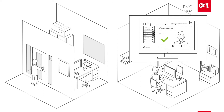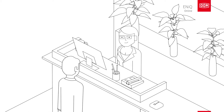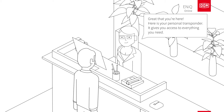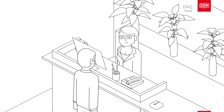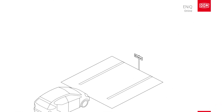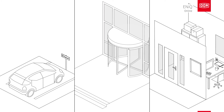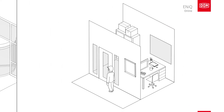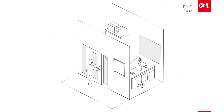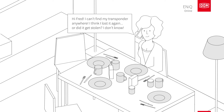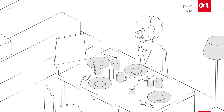Fred can also create temporary access privileges for visitors, like Victor. Victor comes to work at the office temporarily — only this week. Fred has already added him to the software, so Victor only has to pick up his transponder at the front desk. Victor's transponder gives him access to the parking lot, main entrance, and the door to his temporary office in the building, only during certain hours. At the end of the week, it automatically stops working.